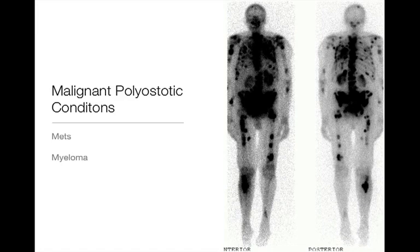Malignant polyostatic conditions really just boil down to metastasis and multiple myeloma. This Technetium-99m MDP bone scan shows a patient with multiple skeletal metastases and soft tissue metastases — the primary in this case was an osteosarcoma in the proximal tibia that metastasized widely. Metastases and myeloma usually occur in adults over 50; if under 50, you may leave myeloma out of your differential. Metastases that tend to be expansile and lytic are from thyroid and renal primaries.